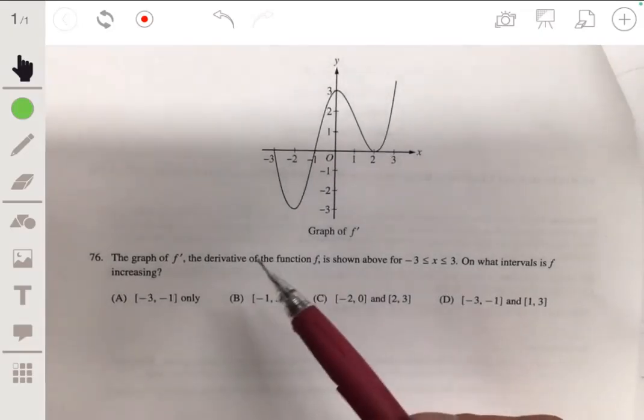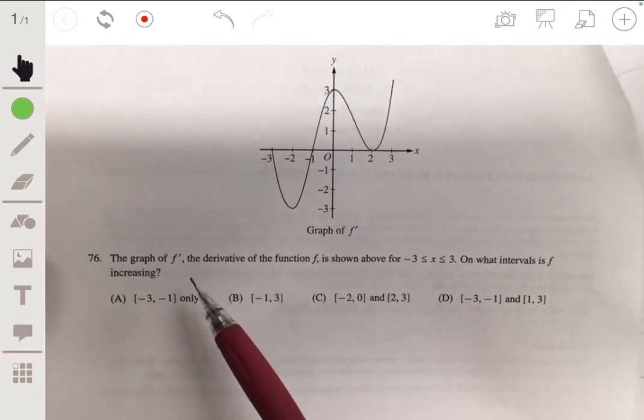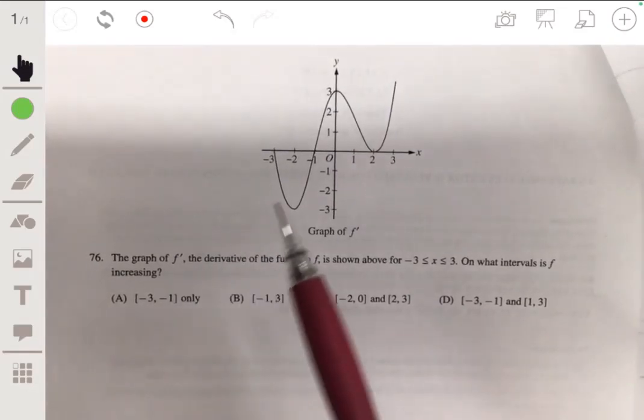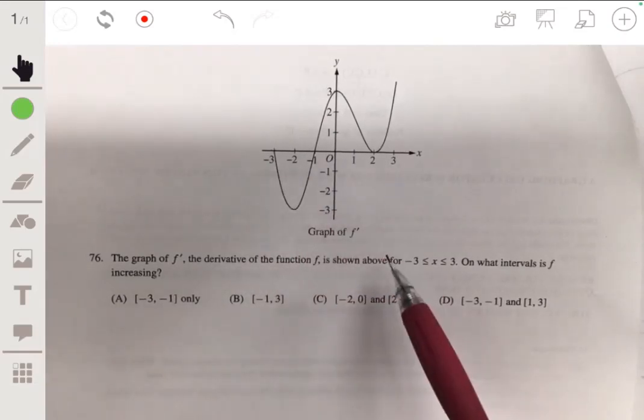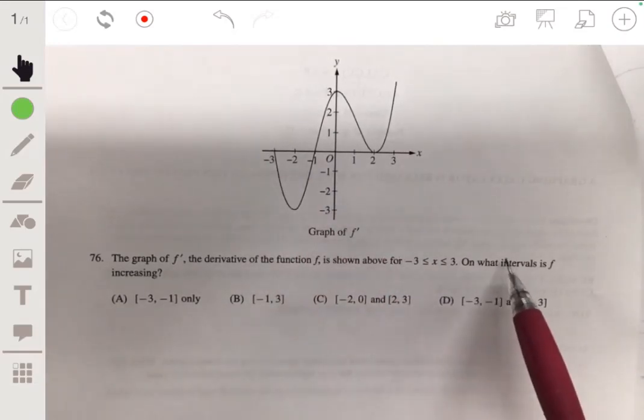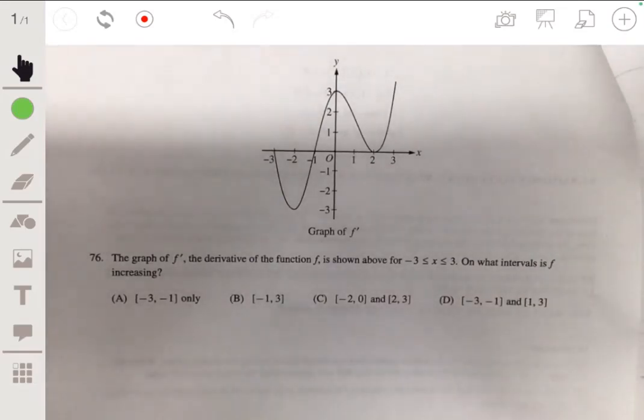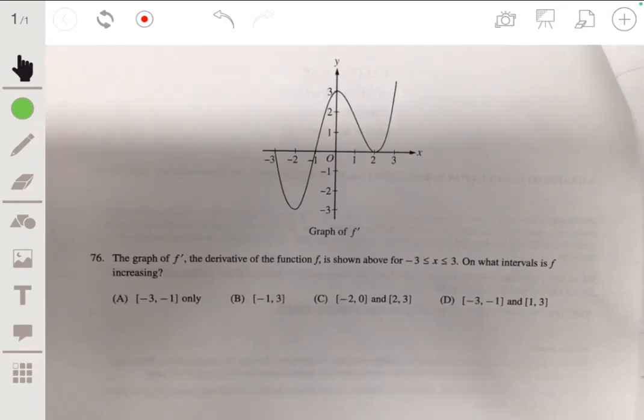Alright, so for problem 76, we have that the graph of f prime, which is the derivative of f, is shown here from negative three to three. We want to figure out what intervals f is increasing. Remember, the derivative tells you the rate of increase and gives you an idea of how the behavior of the function is changing.